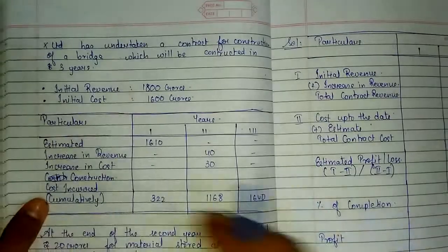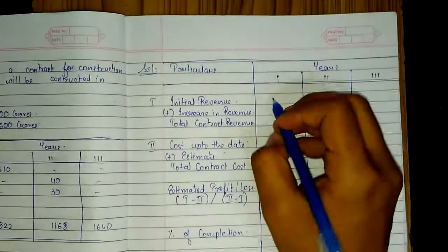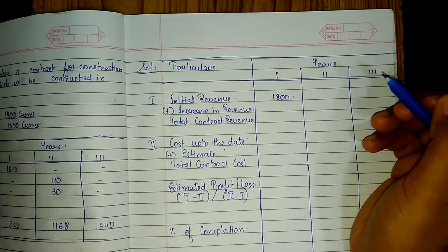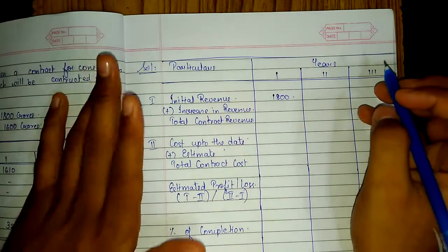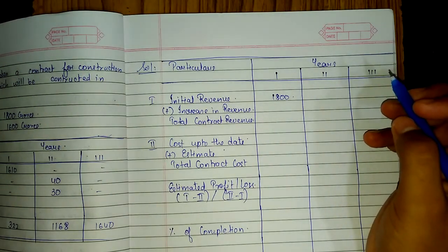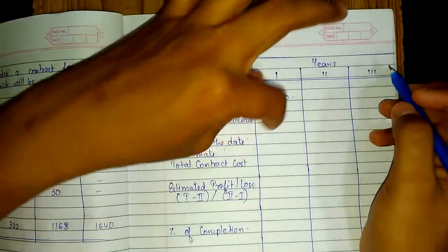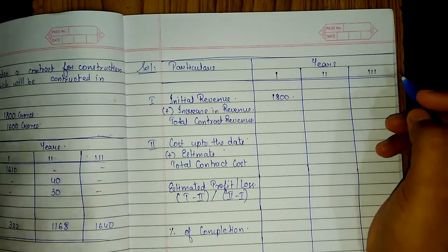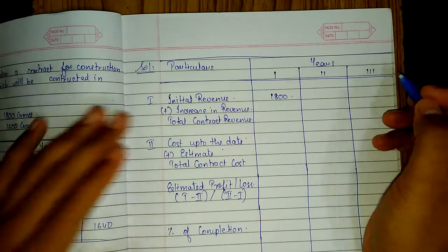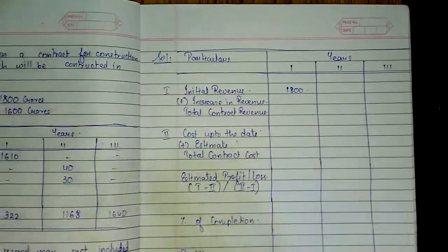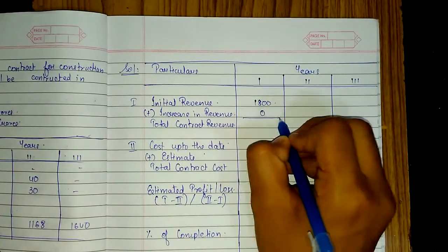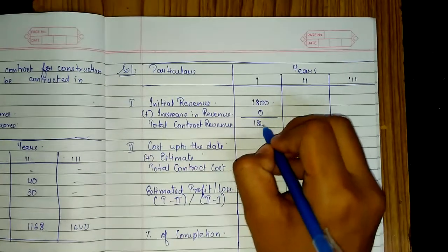For Year 1: initial revenue is 1800 crores. There is no increase in revenue, so we write zero. Therefore, total contract revenue for Year 1 is 1800 crores. Note there is an application of AS5 which I'll explain when we reach the later years, so we go year by year.